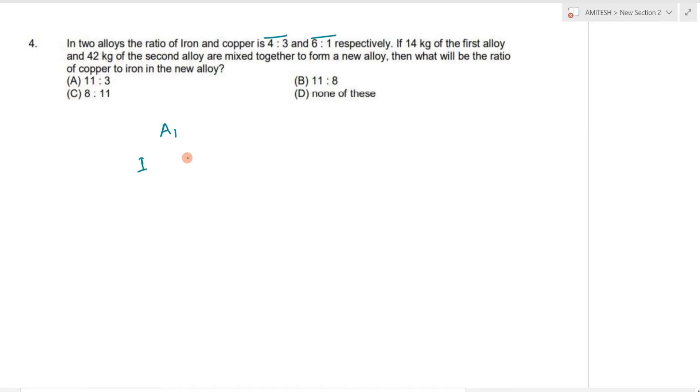In alloys, the ratio of iron and copper is 4 is to 3 and this is 14 kg. So here total is 4 plus 3. If 14 kg is a unit, then 1 unit is equal to 2 kg. It means iron is 4 into 2, so this is 8 and copper is 4 into 2.